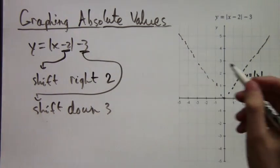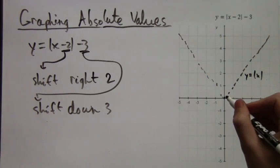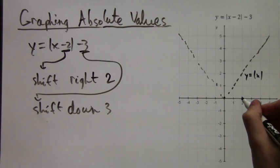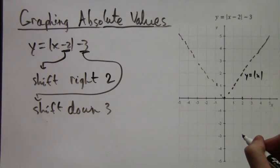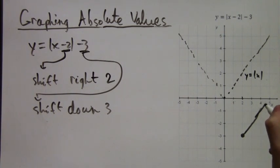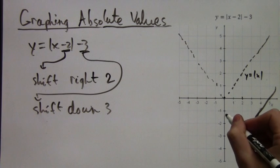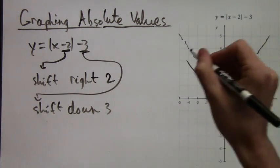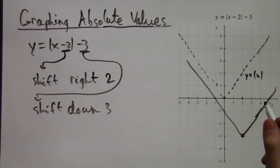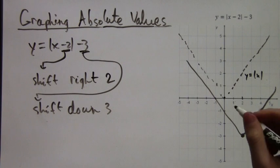So the easiest way to do this is just take this cusp, this corner, and look at where it ends up. So we shift right 2, down 3, and there it is. And the rest of it is just straight lines. That means you just draw them straight up in one direction, and then straight up in the other direction. And that's the graph that we get for y equals |x minus 2| minus 3.